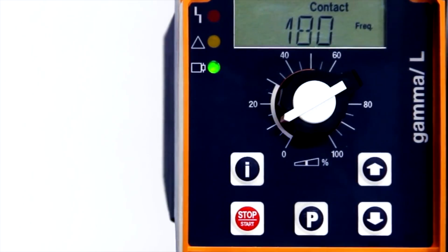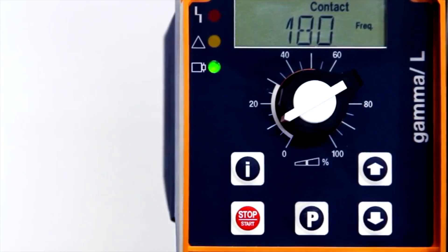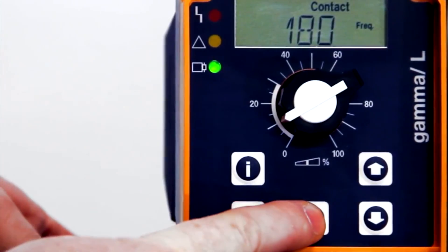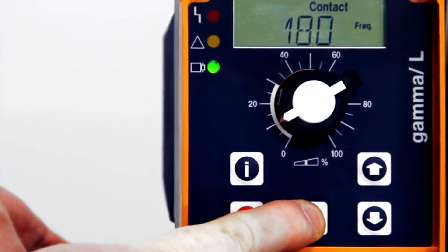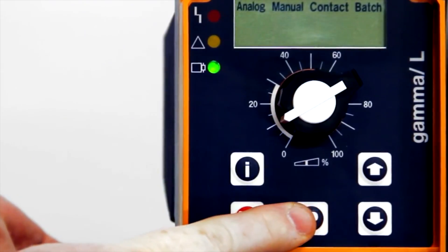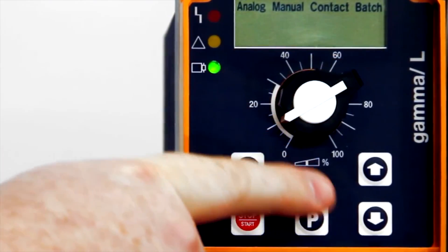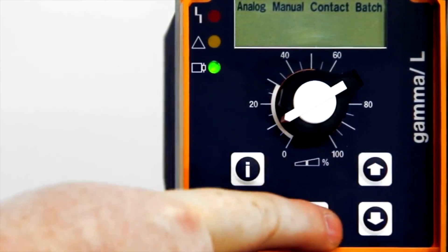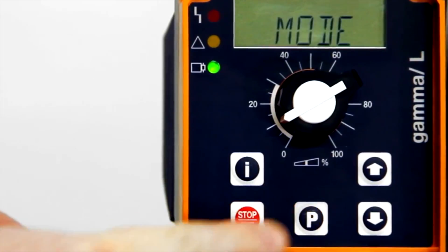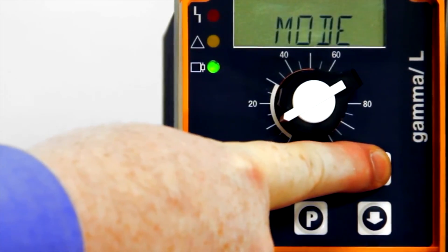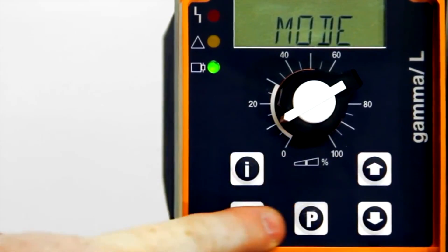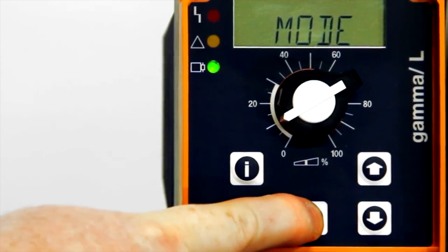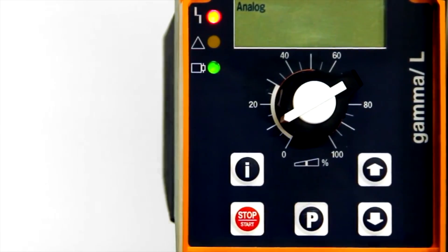The next mode of operation we'll talk about is the analog mode of operation. Typically, that's a 4 to 20 milliamp signal. Again, we press and hold the P key until we see the word mode flashing. We use the up or down arrow buttons if something else comes up. Press P at mode. Now we scroll again with the up or down arrow key until we see the word analog flashing. We press the P key once quickly, and we're in the analog mode of operation.